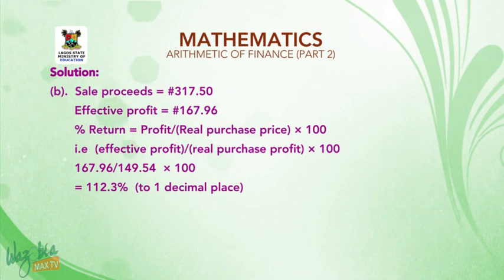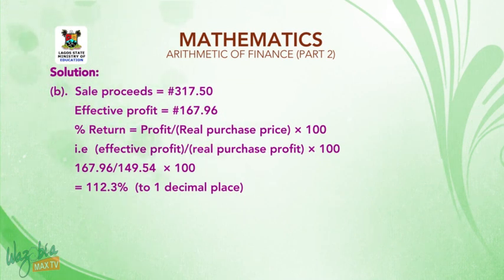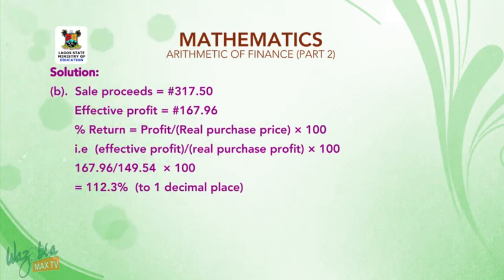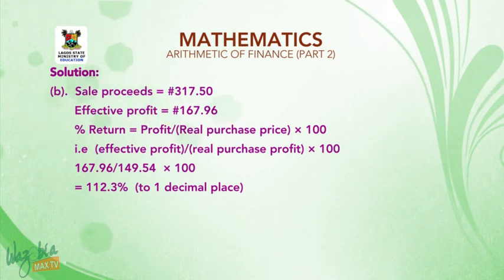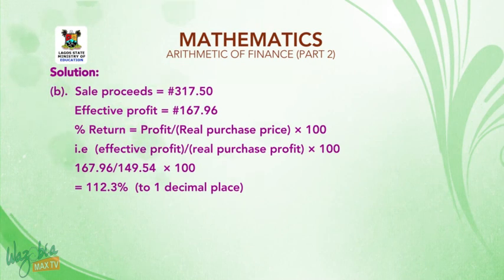Part B: Sale proceeds = 317 Naira 50 kobo, effective profit = 167 Naira 96 kobo. Percentage return = (effective profit / real purchase price) × 100 = (167.96 / 149.54) × 100 = 112.3% to one decimal place.